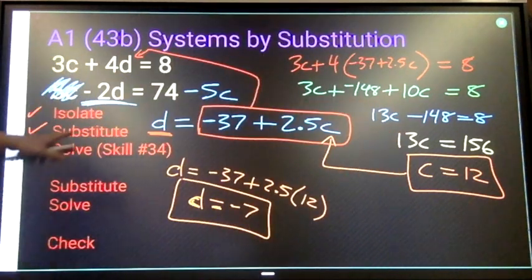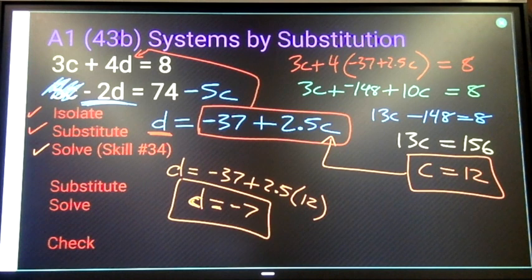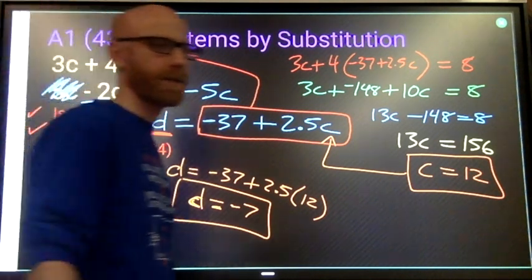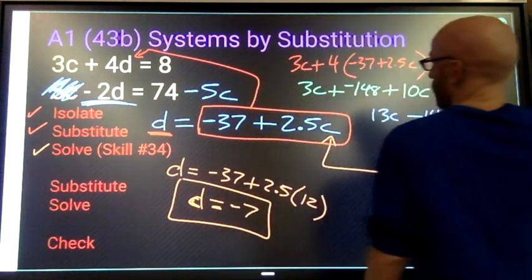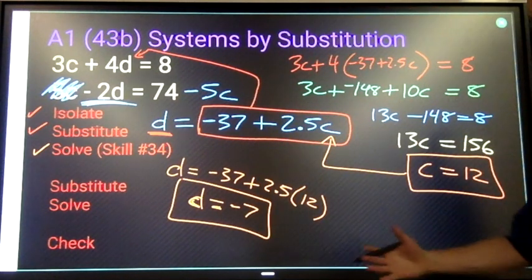Okay. So these are the two values, the ordered pair that will solve both of those equations. Anyway, that's solving by substitution, solving systems by substitution with isolation. That's how it works.